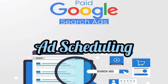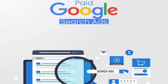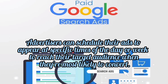Ad Scheduling: Advertisers can schedule their ads to appear at specific times of the day or week to reach their target audience when they are most likely to convert.